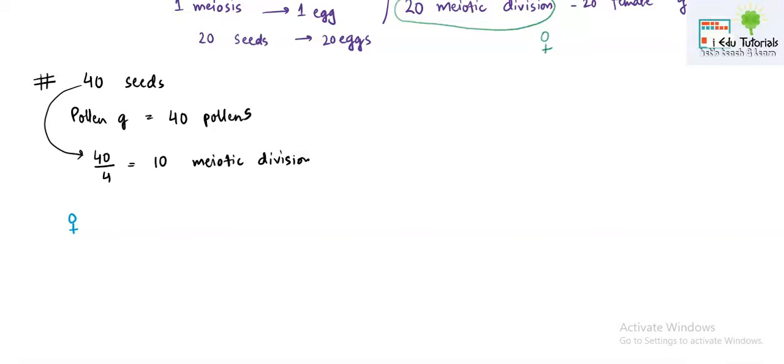Now let's find out for the female gamete. We require 40 eggs for 40 seeds to be there with us. Now one meiotic division forms one functional egg as we have discussed in the above example. So that means for 40 seeds, how many meiotic divisions will be required?